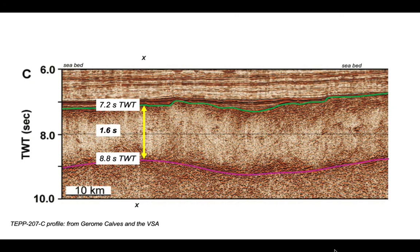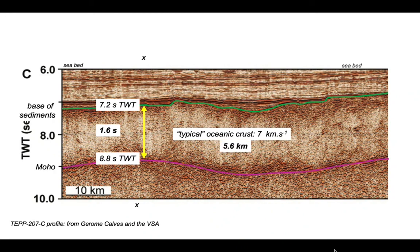We need to assign an interval velocity for the oceanic crust, and a typical value is around 7 kilometers per second. The seismic energy has traveled from the top of the oceanic crust to the Moho and back in 1.6 seconds at 7 kilometers per second, therefore it has traveled 11.2 kilometers. That's the two-way travel distance, so the single distance between the top and base of the crust is half of that — 5.6 kilometers.